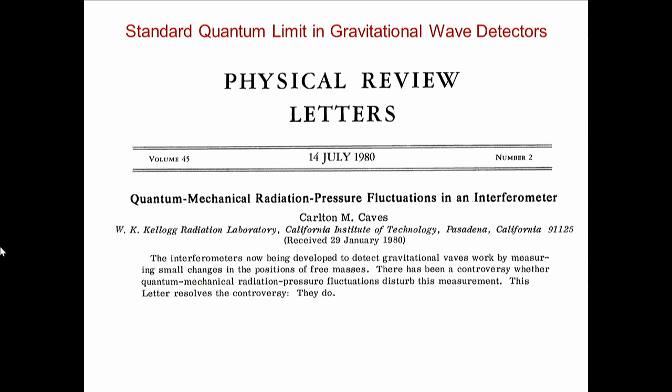Let's make a big jump and go to the year 1980. Here is another paper by Carlton Caves on the radiation pressure fluctuations in interferometers. I show you this paper also because it has a very nice abstract - if you ever write a paper, this is how you should phrase an abstract. He says: 'The interferometers now being developed to detect gravitational waves work by measuring small changes in the positions of free masses.' The first sentence puts the context. The second sentence puts the problem. The third sentence gives the solution: 'This letter resolves the controversy. They do.'